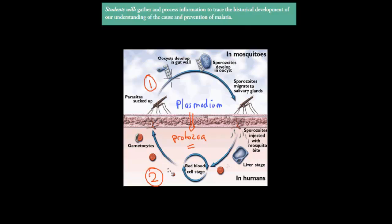The plasmodium develops in the gut of a mosquito. Mosquitoes will find human beings — and other animals — and suck their blood. By doing so, they will inject the slightly more mature early forms of the plasmodium — called sporocytes — into our body and into our blood.